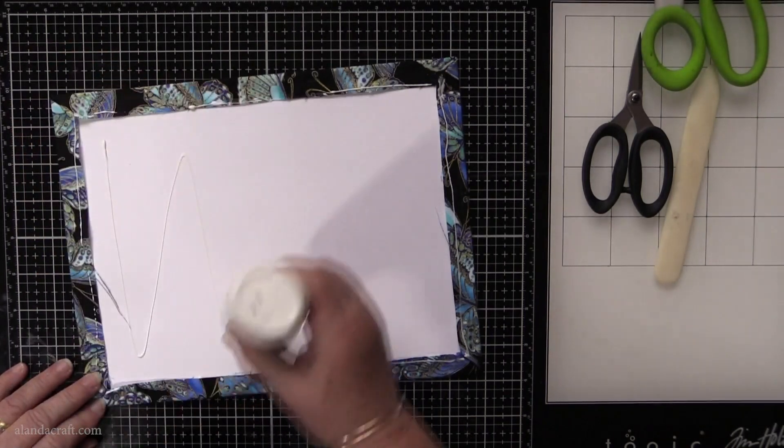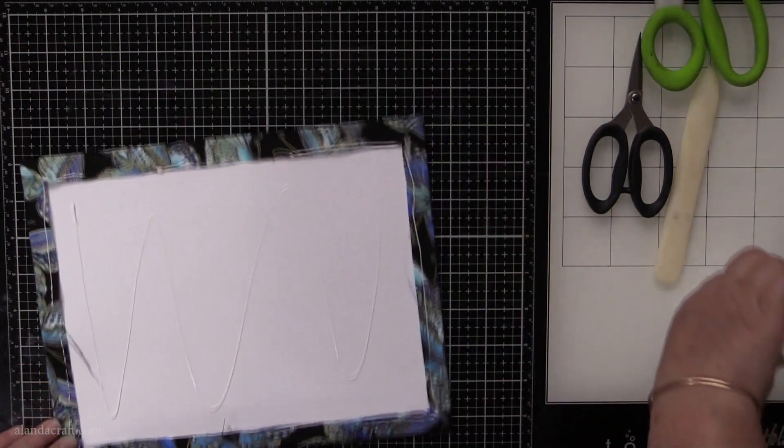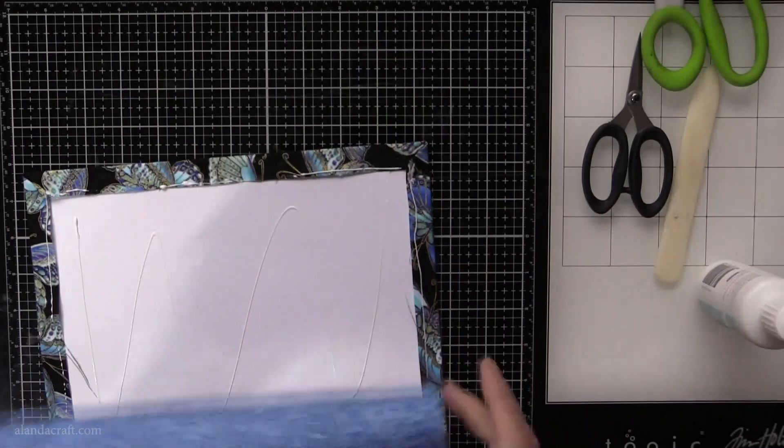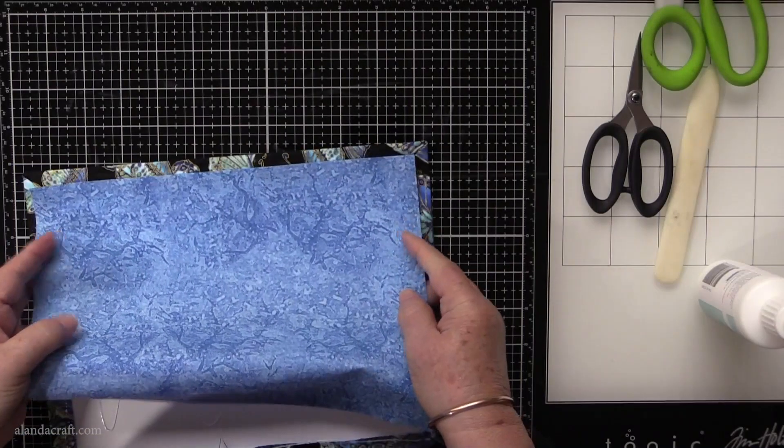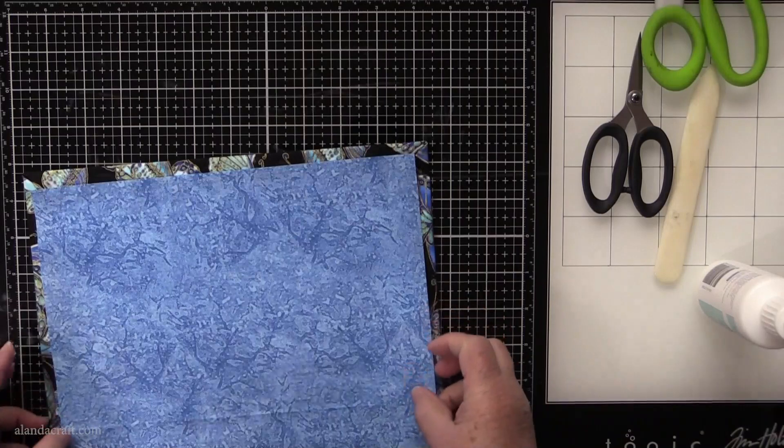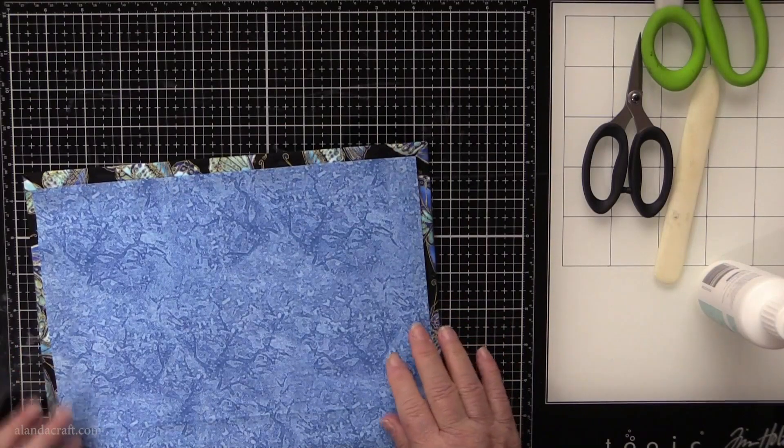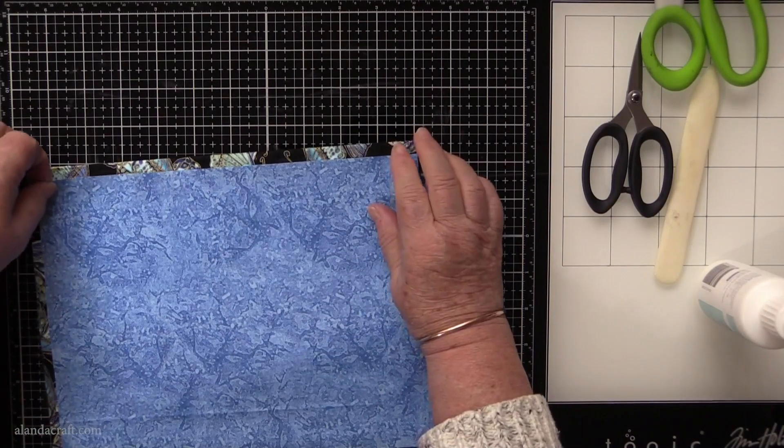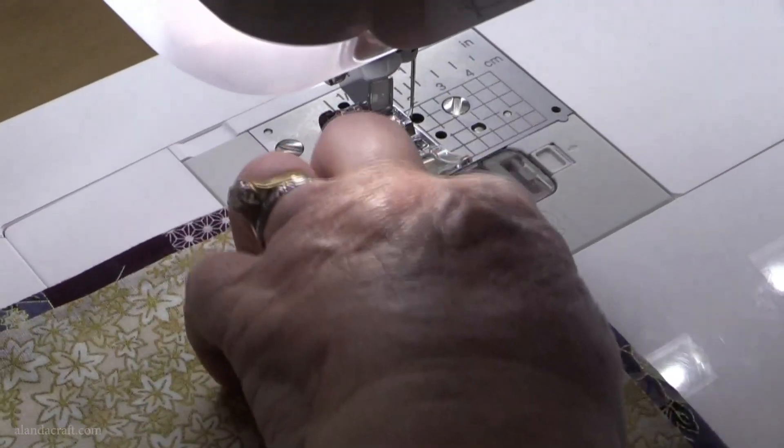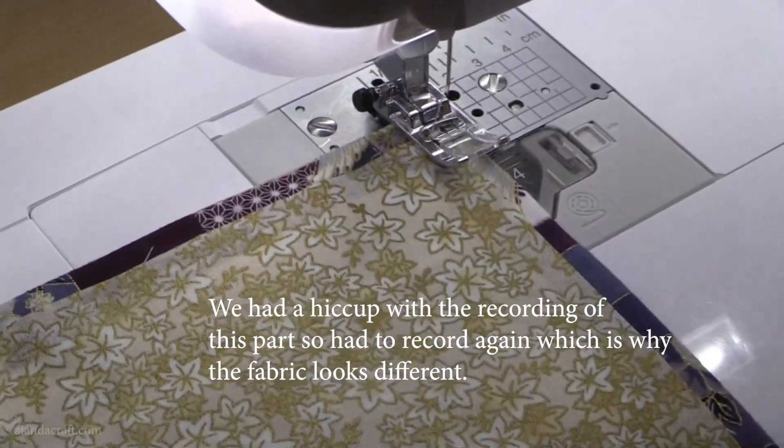And then just across the middle. Try and get it even all the way around - it just makes it look a bit neater. Okay, so now what I'm going to do is a zigzag stitch all the way around.